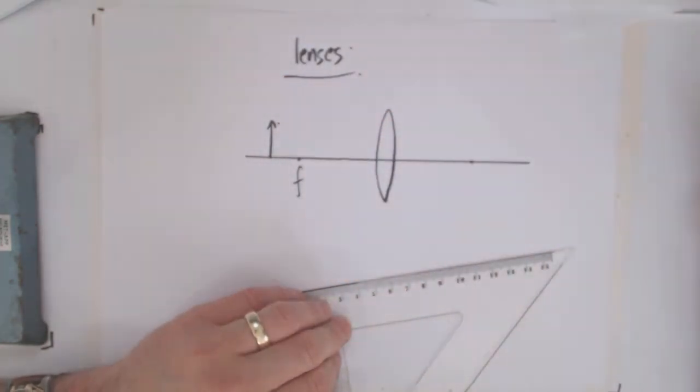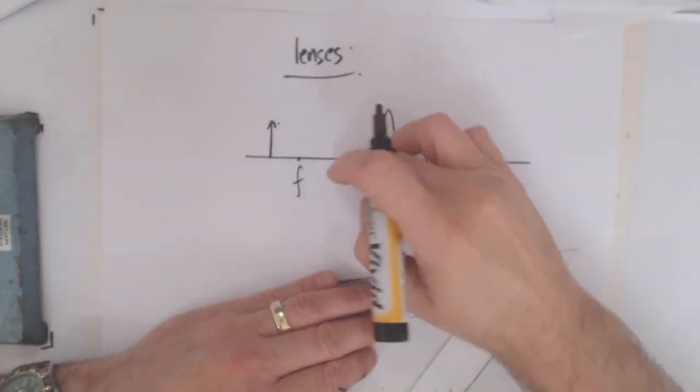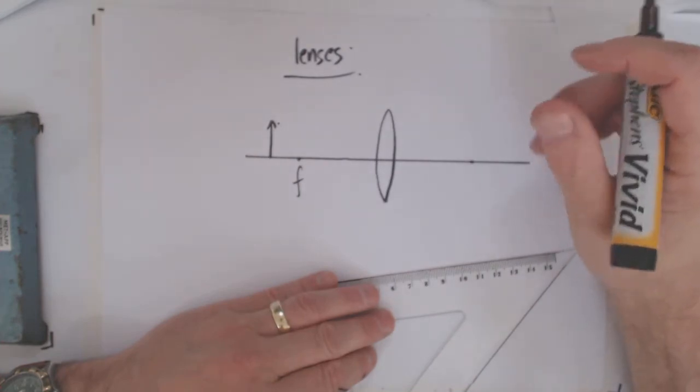When it was like that, it was an enlarged virtual image. So that's the magnifying setup for this type of lens.